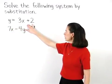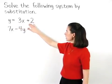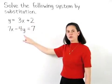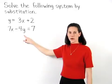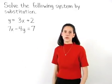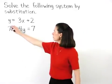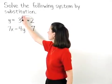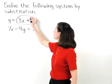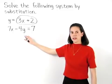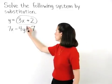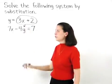this means that we can substitute a 3x plus 2 in for the y in our second equation. In other words, since y means the same thing as 3x plus 2, we can replace the y in the second equation with a 3x plus 2.